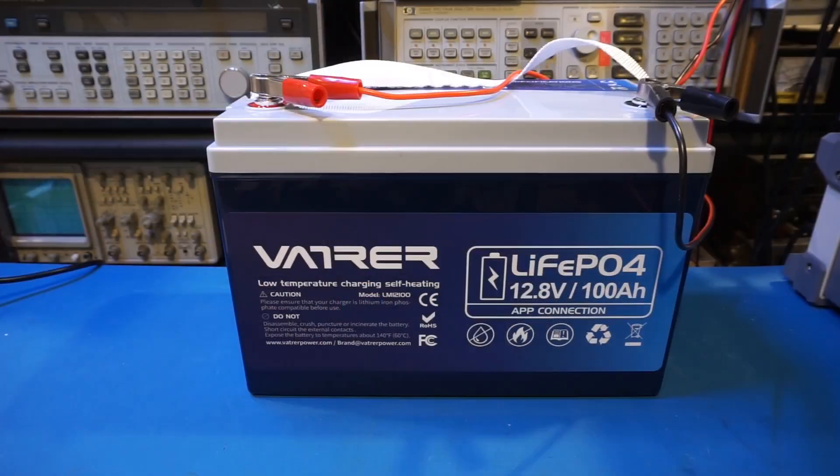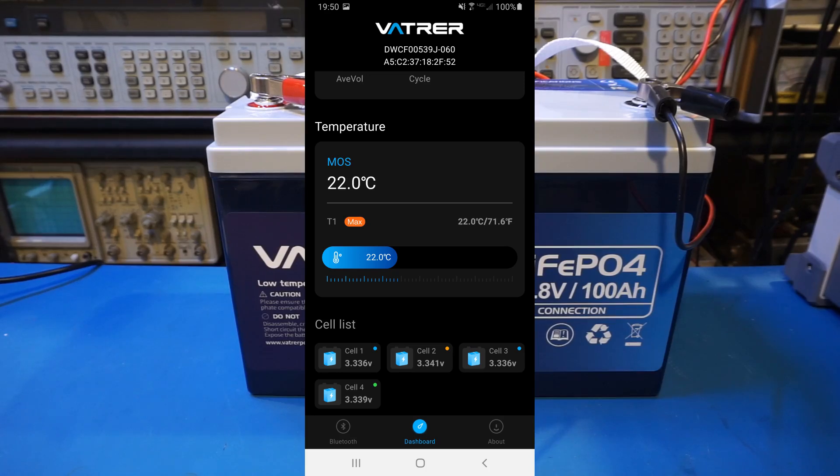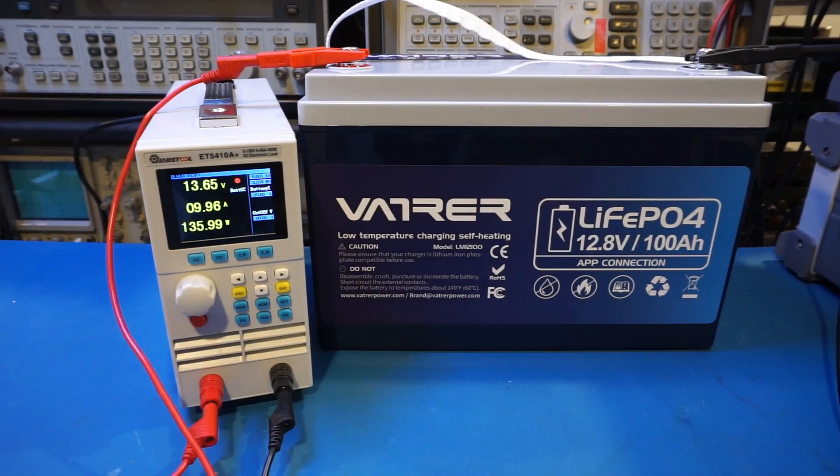To test the battery capacity, I first fully charged the battery to 14.6 volts using the recommended 20 amp charging current. After the battery is fully charged, I held the voltage at 14.6 volts for a few more hours, allowing the battery cells to be balanced. You can see this balancing in action on the phone app. Once the cells are balanced, their voltages are within 10 millivolts of each other.